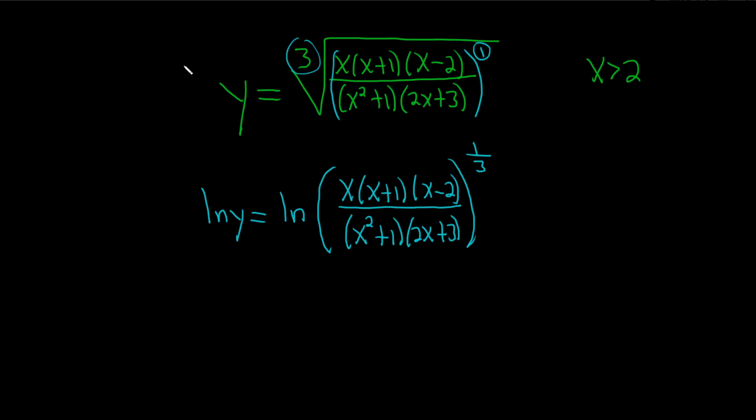So the first step, take the natural log of both sides. The second step is to use properties of logs to clean this up as much as possible, and then you take the derivative. That's the last step. And then solve for it. So let's go ahead and use some properties here. Because we have a number here, we can bring it down and put it in the front.